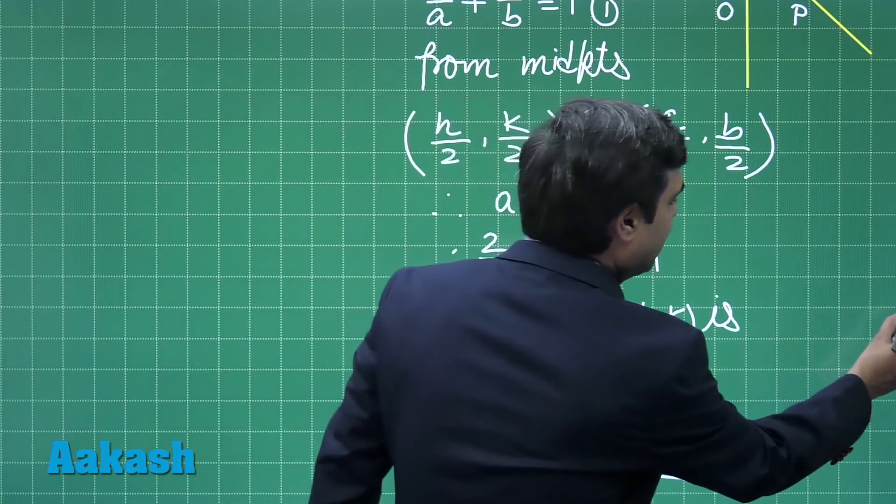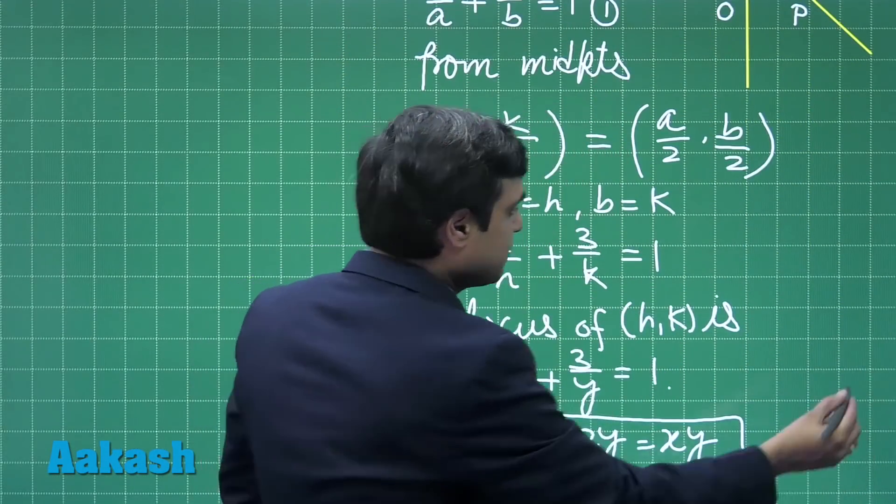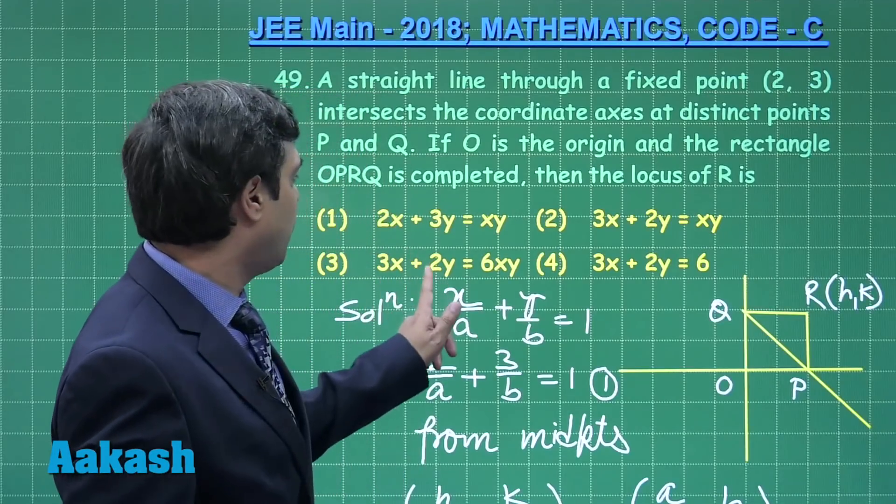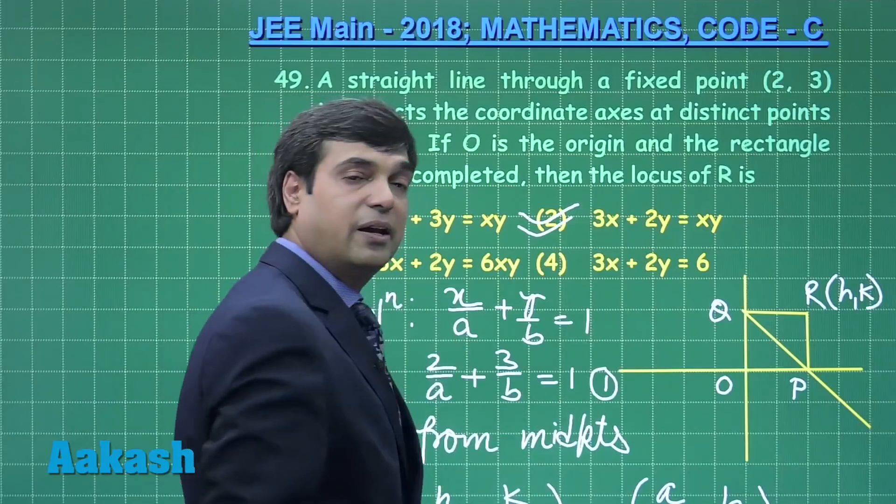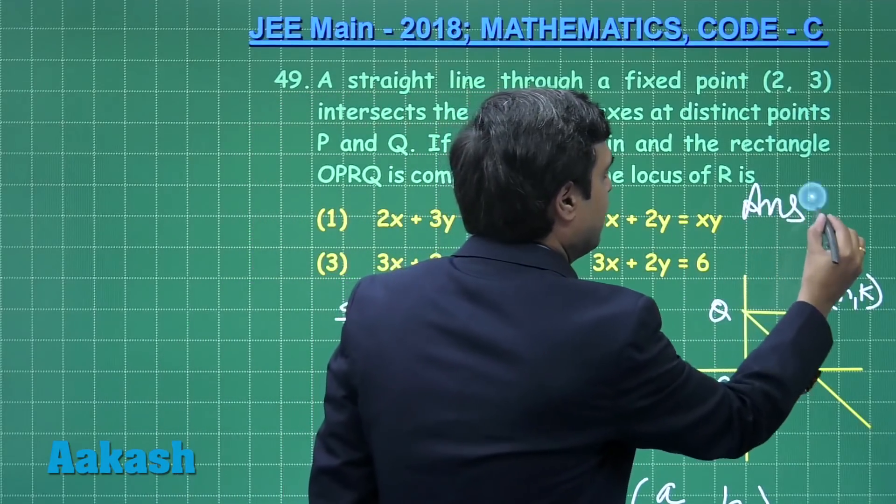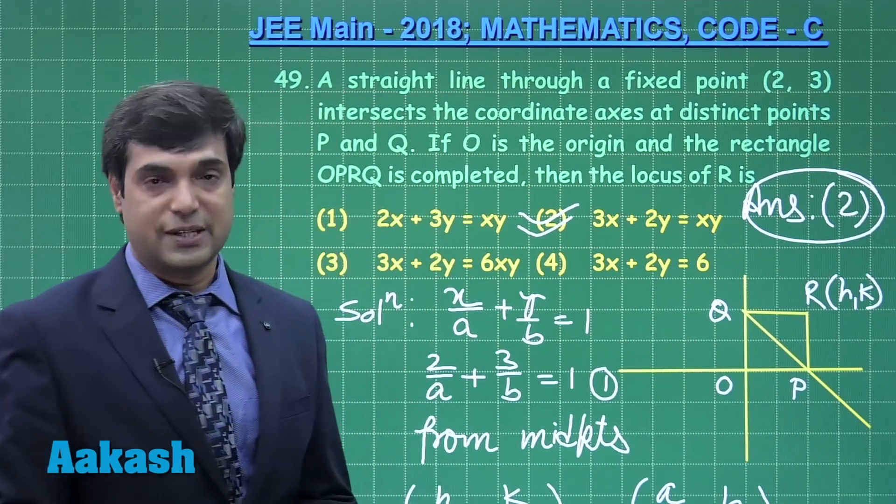A simple question, but little conceptual; we need to understand the correct one. Considering 3x + 2y, let us check the options: 3x + 2y = xy, that is option 2 is the correct one. Correct answer is option 2. Moving to the next question.